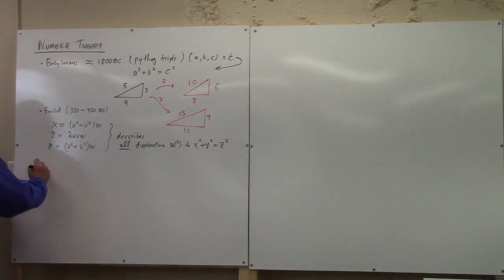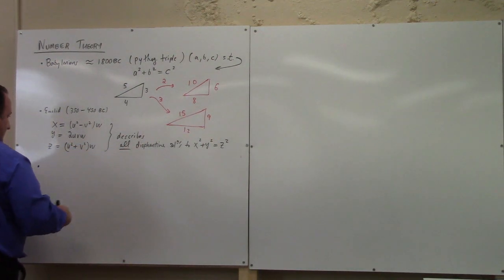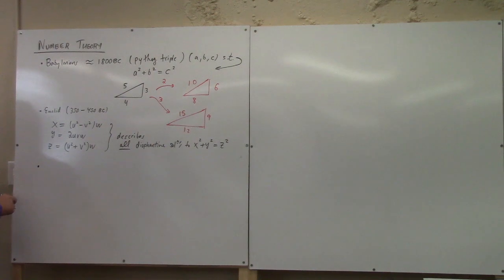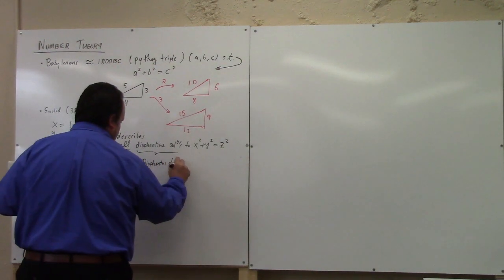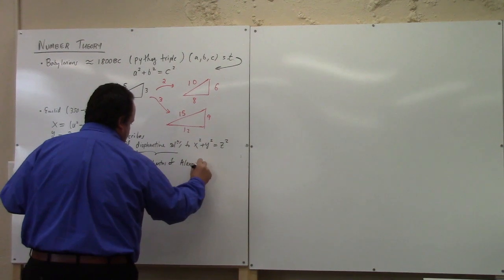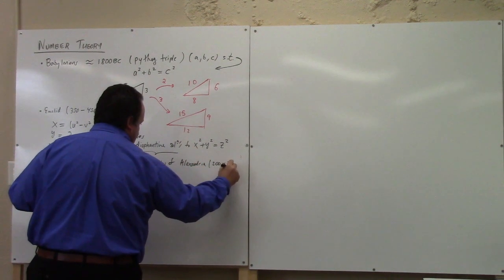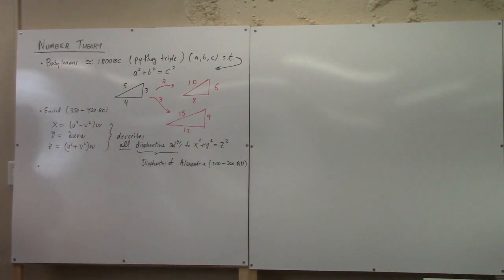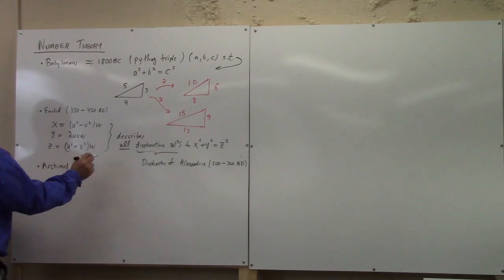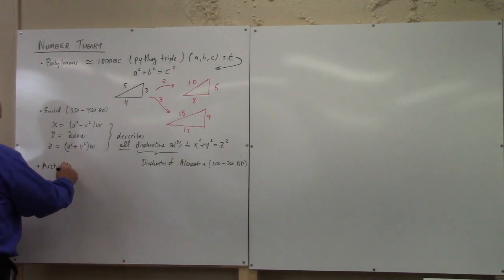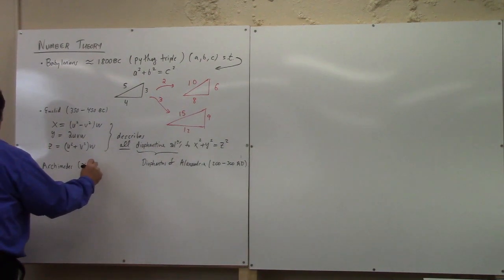Archimedes. Now, this word I just used, Diophantine, refers to Diophantus of Alexandria. And this character here, something like 200 to 300 A.D. So that's about 600 years after Euclid. Between those, you have Archimedes, something like 287 to 212 B.C.